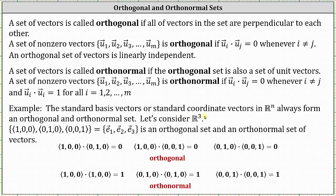Let's consider R³, where the standard basis vectors are the vectors (1, 0, 0) or vector e₁, the vector (0, 1, 0) or vector e₂, and the vector (0, 0, 1) or vector e₃. This is an orthogonal set as well as an orthonormal set of vectors.